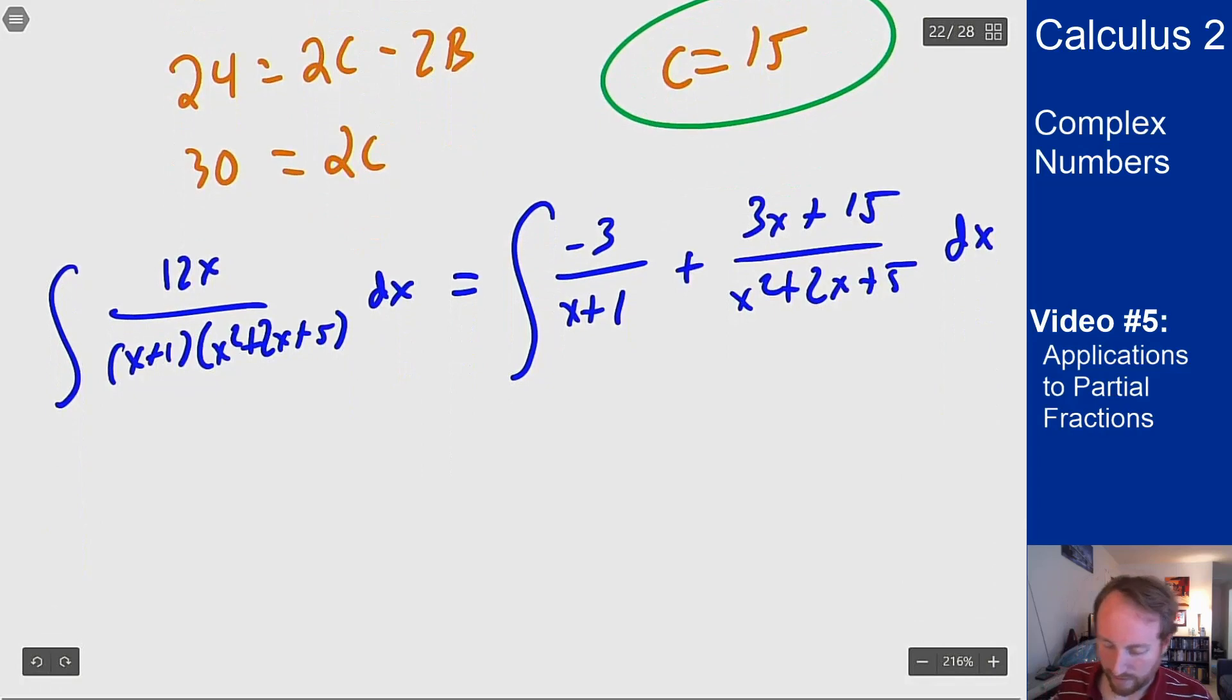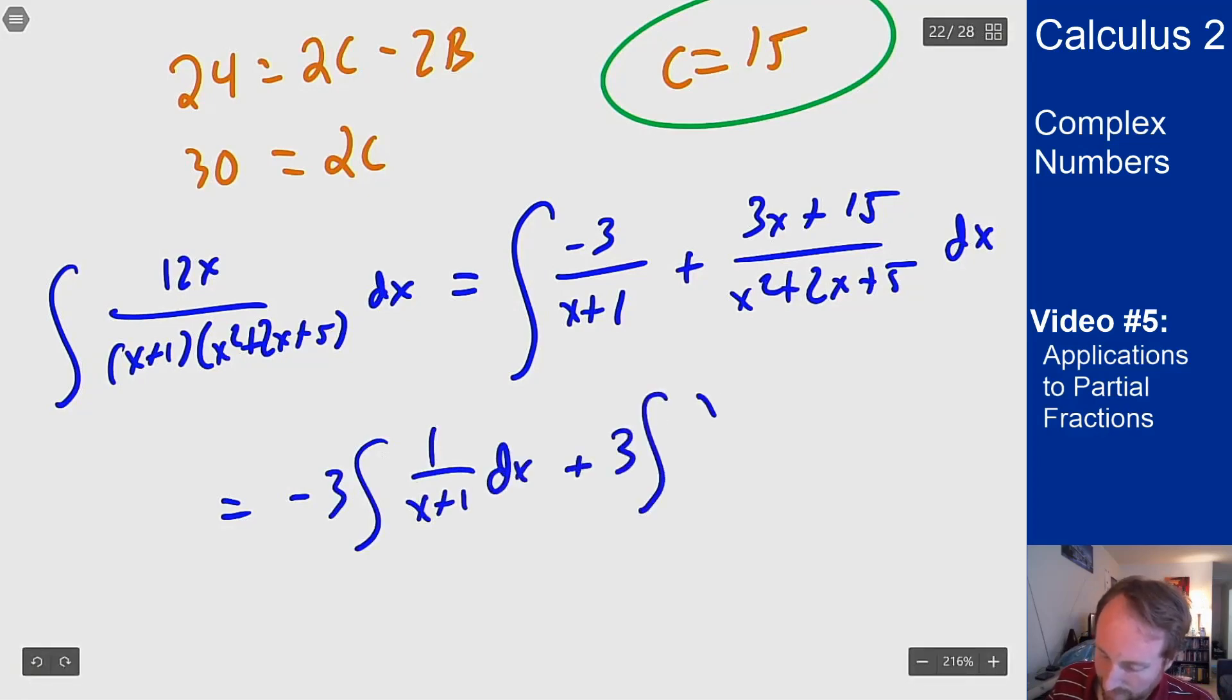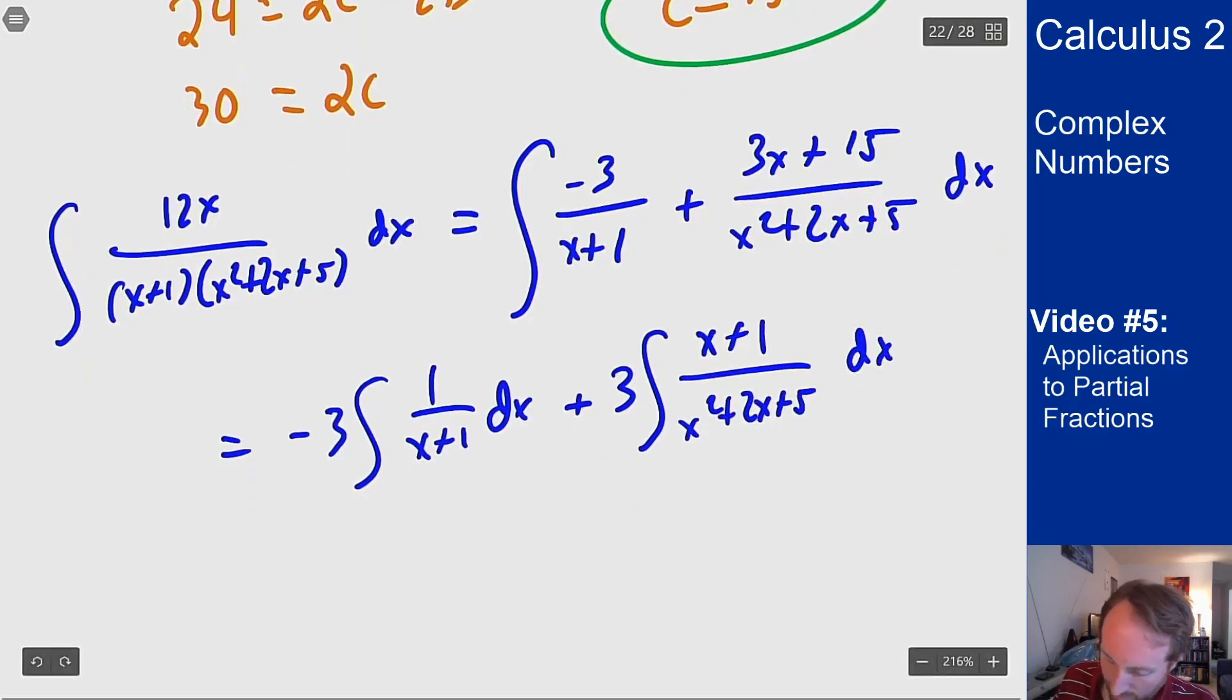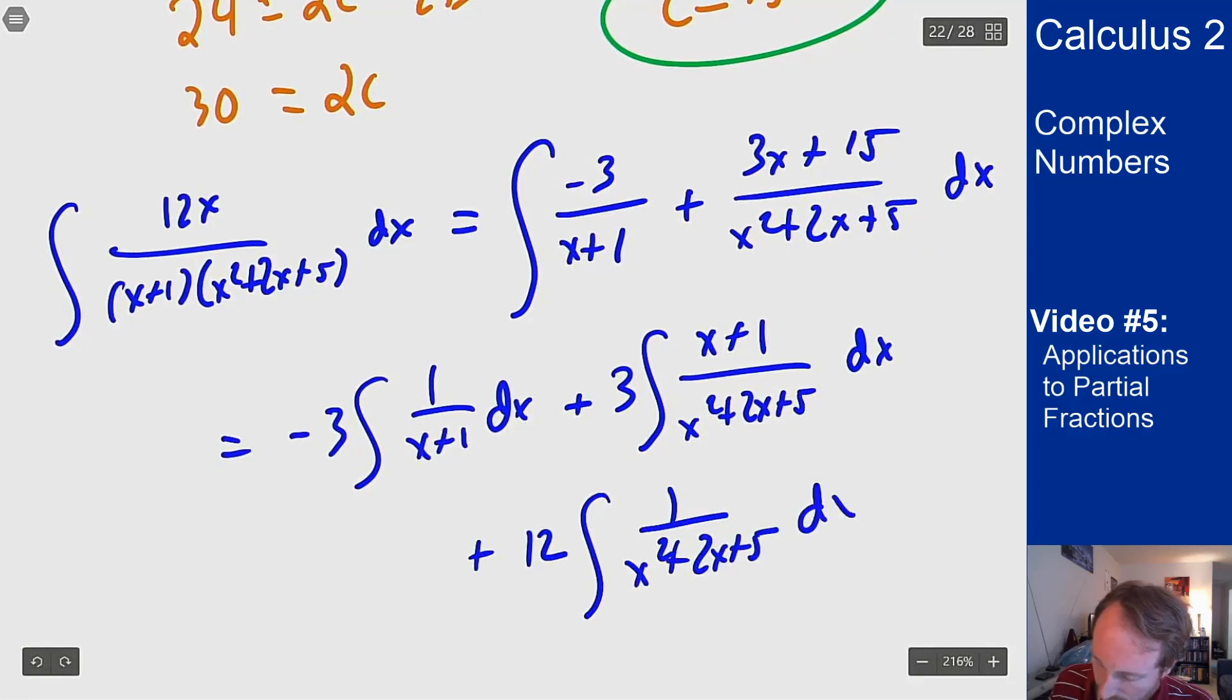I'm going to get -3∫1/(x+1)dx + 3∫(x+1)/(x²+2x+5)dx and that's our trick from before of grouping the x+1 because that's going to be my du in this problem and then plus 12∫1/(x²+2x+5)dx and then we can solve these out.